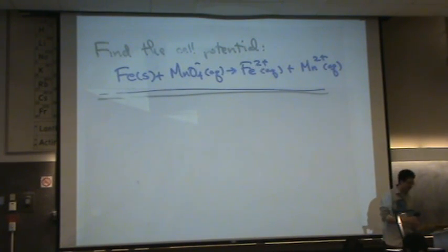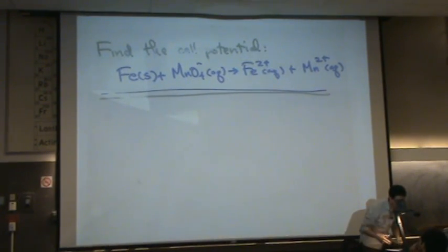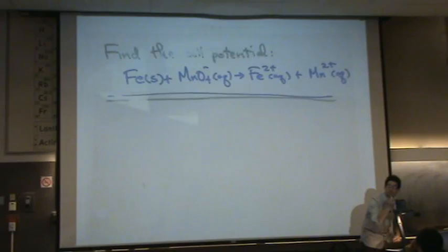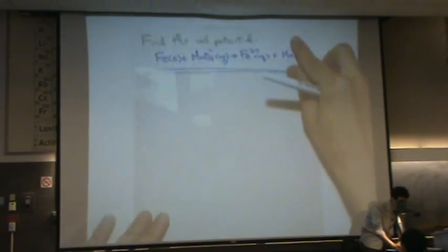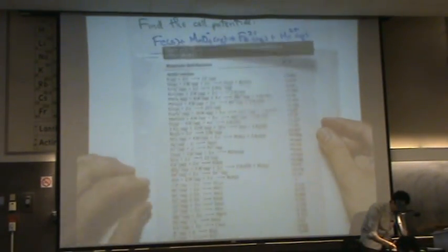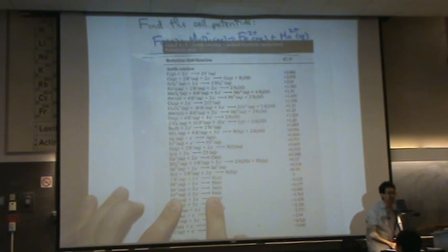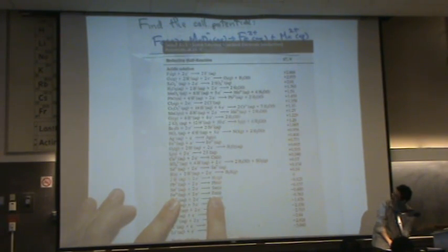So what I want to do is write down the half reactions. Let's do it the easy way. I have iron going to iron two plus. Let's say you want to be brainless, which most of us do. You just look here. Here's the half reaction, already balanced for you. So I'm just going to copy this down straight from the table.